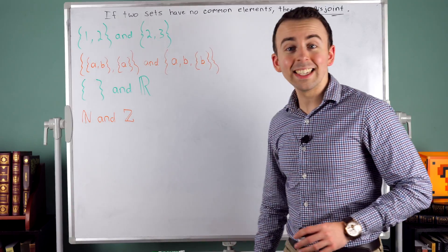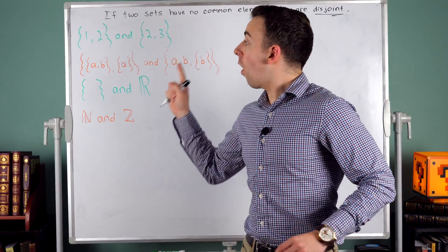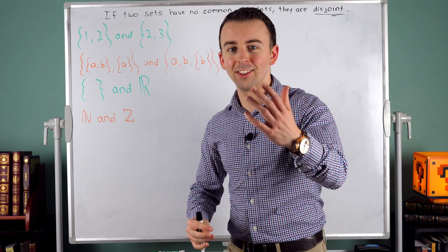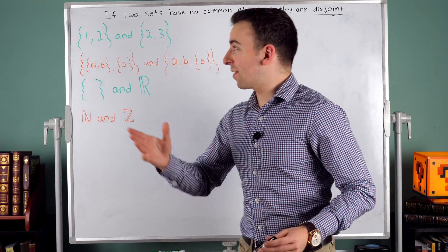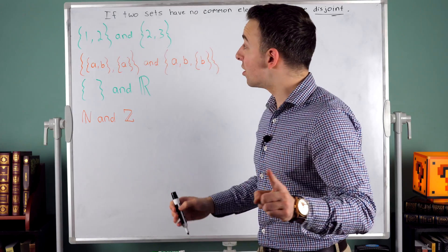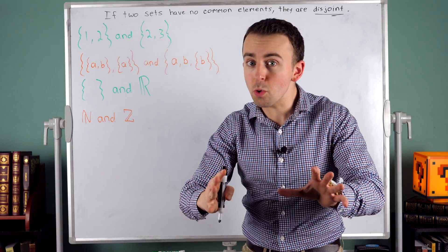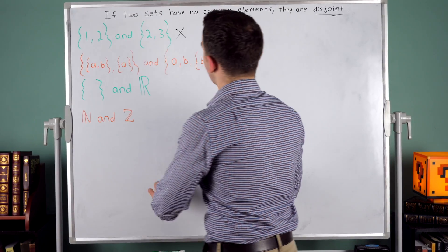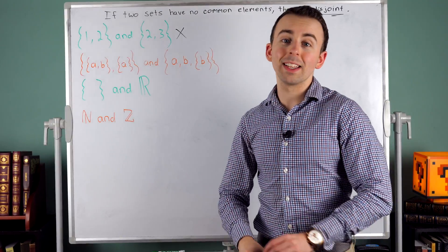Here's the set containing one and two, and the set containing two and three. Are those sets disjoint? You know the answer. Are they disjoint? Well, you have to ask: do they have any elements in common? In this case, yes, they do. Two belongs to both sets, so they do have at least one element in common. So they are not disjoint — they are not disjoint because they do have elements in common.